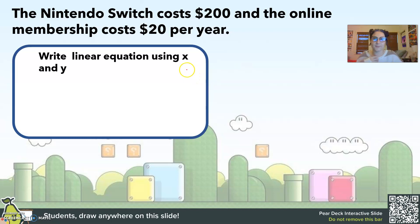So let's try this problem. The Nintendo Switch costs $200 and the online membership costs $20 per year. I'm going to write an equation using x and y. So x is an input value. So what are we putting into this function? Well, we're putting in how many years. Because I can't know the total cost until I know how many years I've been paying for the membership.